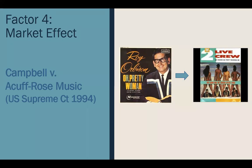Because the work was highly transformative, the court placed less significance on the other three factors. The commercial nature — Two Live Crew obviously sold their version, as did Roy Orbison — is only one element and would not preclude them from relying on fair use. Under factor two — nature — there wasn't really much to weigh in on because both versions are creative and artistic in nature. Because the Two Live Crew version is meant to be a parody, their parody actually relies on the fact that this is a creative and well-known original. Justice Souter noted there was no resolution on factor two in this instance.